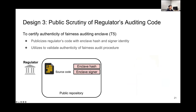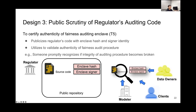The third design point is public scrutiny of the regulator's auditing code. This is to certify the authenticity of the fairness auditing enclave. The regulator's code enclave has its signed identity made public, and others use this information to validate the authenticity of the fairness audit procedure. The regulator puts this information into a public repository, and if the integrity of the auditing procedure becomes broken, others can promptly recognize it by comparing this public information with what they receive.